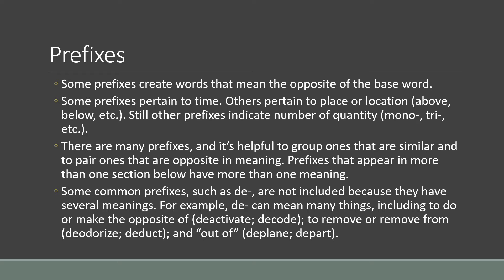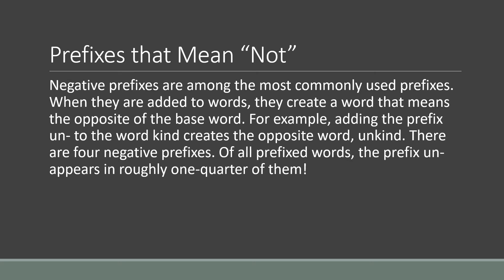Prefixes that appear in more than one section have more than one meaning. Some common prefixes such as 'de' are not included in one category because they have several meanings. For example, 'de' can mean the opposite of — as in 'decode'; to remove or remove from — as in 'deodorize'; to remove the order of — as in 'deduct'; or out of — as in 'depart,' meaning not part of something.